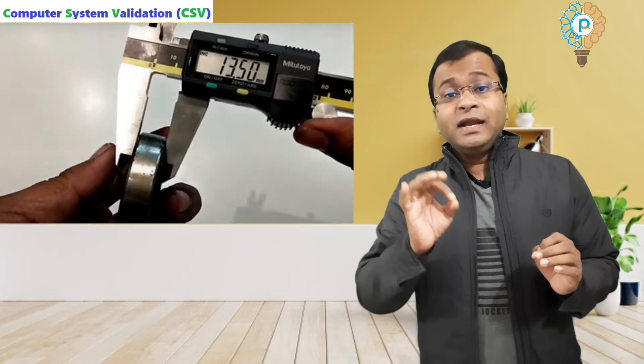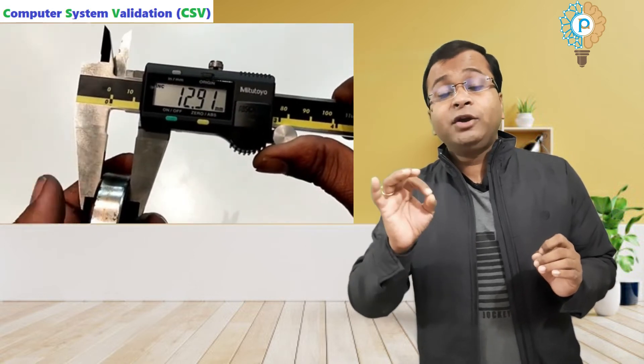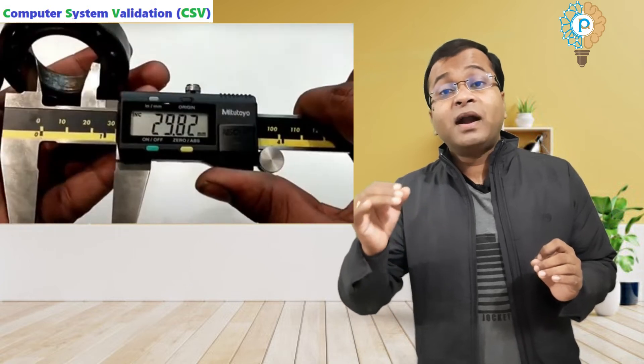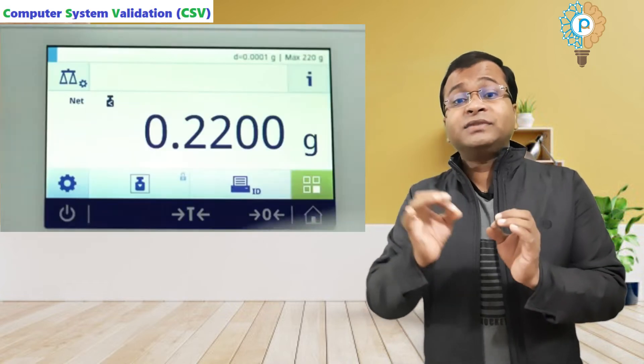Now I am telling you about Category 3A. In Category 3A, you can view the reading. Example: digital vernier calipers. In Category 3B, you can view the reading and get the system-generated printout, like analytical balance.